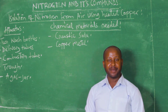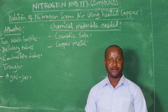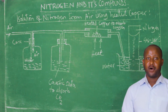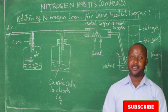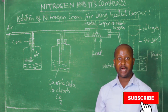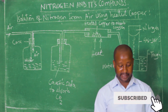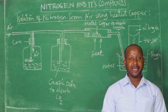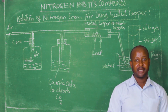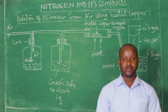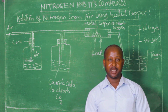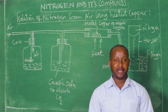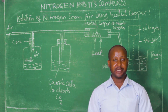Let's look at the diagrammatic arrangement for the setup of this experiment. This is the diagrammatic setup for the arrangement used to isolate nitrogen from air using heated copper.